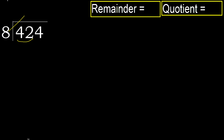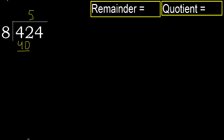8 multiplied by which number is nearest to 42 but not greater? 8 multiplied by 6 is 48, which is greater. 8 multiplied by 5 is 40, which is not greater. So we subtract: 42 minus 40.